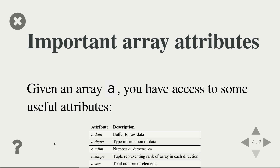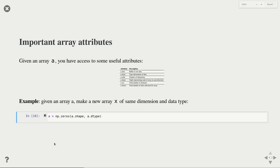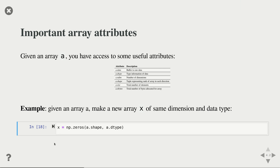Here's an example using these attributes: if you get an array inside a function and want to create another array of the same size and data type, you can use np.zeros with a.shape as the argument — since a.shape is a tuple it can be passed directly — and also specify dtype=a.dtype to ensure the new array has the same data type.